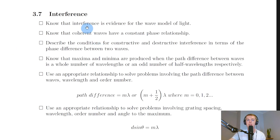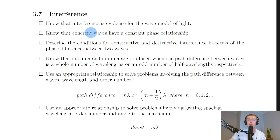Next we have interference, the second-last subtopic. Interference is evidence for the wave model of light — opposite to the photoelectric effect, which provides evidence for the particle model. If we spot an interference pattern, it must be two coherent waves overlapping, telling us light behaves as waves and not just as particles. This brings in the idea of wave-particle duality.